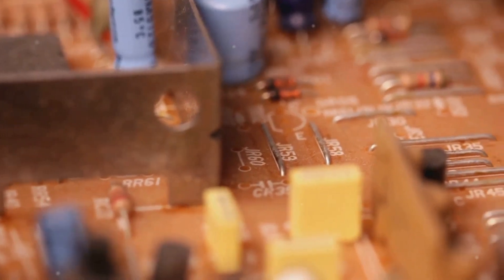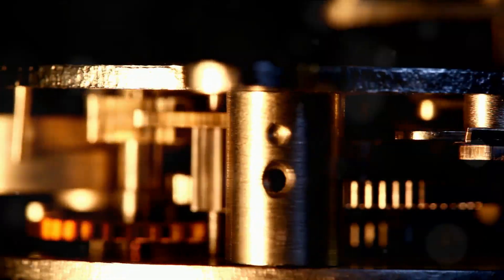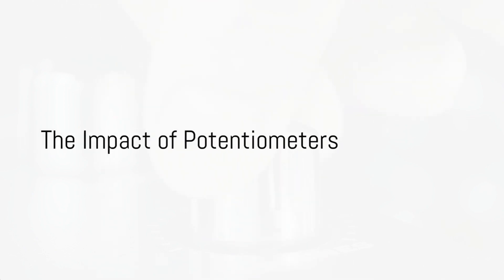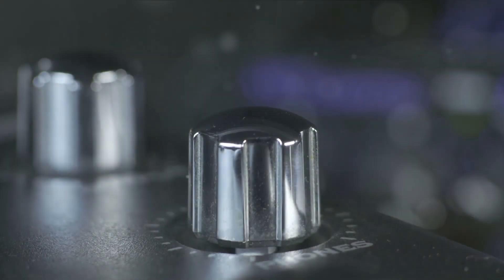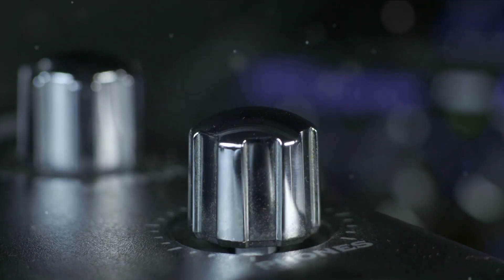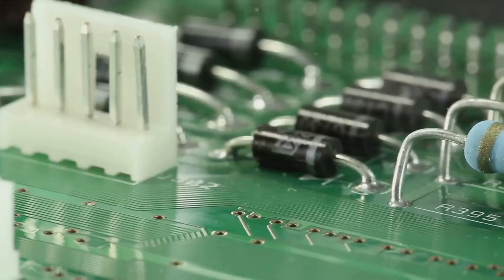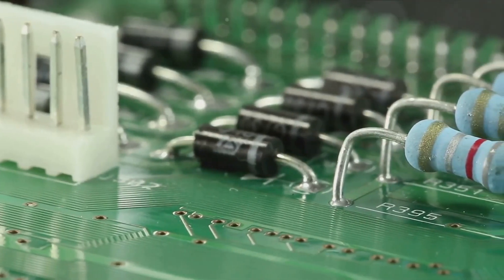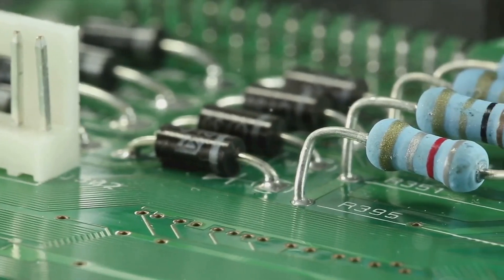It does this through a resistive track and a moveable wiper, and it comes in two main types, rotary and linear. The humble potentiometer may not get much attention, but without it, we wouldn't be able to adjust our devices to our liking. It's just another example of how the simplest components can have the biggest impact in the world of electronics.